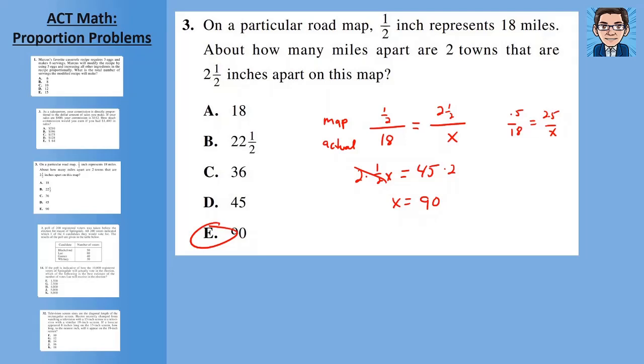Another way you could do it too, when you're setting this up, one half over 18, if you want to get rid of the fraction, if a half is 18, then one is going to be 36. That's another way to do it. You could have got rid of the fraction by going one and 36 and then make the math a little easier that way as well. Either way, you're going to get the answer as 90.